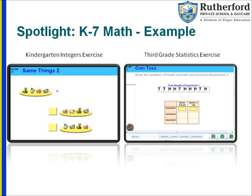On the right side, what you see is a third grade statistics exercise. In this example — similar to exercises you may have done in school yourself — it's an example of a coin toss. A student will use this program to flip a coin electronically on the screen, and over time they'll look at the results. This program will allow the student to really understand the idea of statistics and probability.